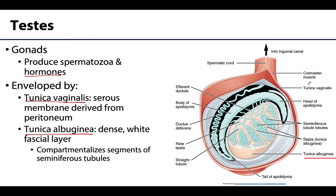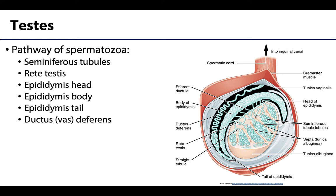The tunica vaginalis has been opened here to look a bit deeper. The tunica albuginea is characteristically white or with a slight bluish tinge in color. It is very dense and projects internally to compartmentalize segments of the seminiferous tubules. These seminiferous tubules are long and highly coiled, as clearly seen in this image, and it is here that spermatogenesis occurs. From the tubules, spermatozoa travel to the rete testis, then to efferent ductules, and then predominantly to the head of the epididymis.